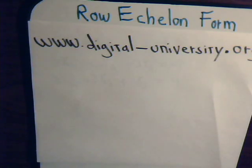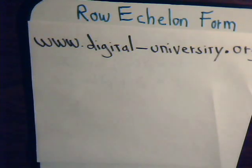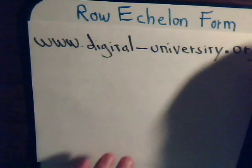This is our first video presentation from digital-university.org concerning topics in linear algebra and matrix theory. We thought we would start off considering the row echelon form, which is a technique used to solve simultaneous linear equations. You may have seen it before, or perhaps be familiar with a variant of the technique.